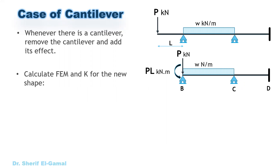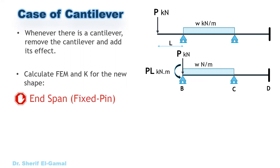Then we calculate the fixed end moment and the stiffness for the new shape. You now have two spans. Span BC will be a pin or roller connection at joint B — it will be the special case with stiffness 3EI over L, not 4EI over L as in the original drawing. The fixed end moment also will be calculated for the special case: fixed from one side and pin from the other.